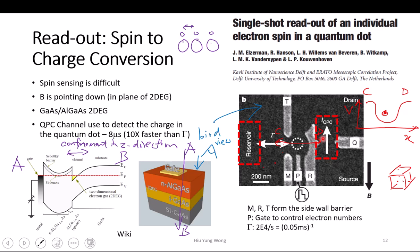The next question is: how do I relate the spin direction to the charge? And this point contact transistor detection is also very important in that it has a very fast detection rate — 8 microseconds. This basically represents the readout time. If you have a system that takes one year to read out, it is useless. In quantum algorithms, we need to do a lot of readouts. So it takes 8 microseconds to read out, which means T1 and T2 better be much longer than 8 microseconds.